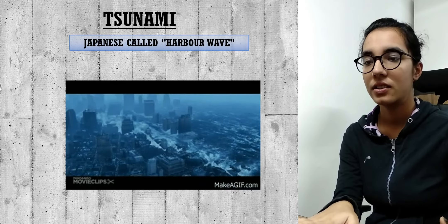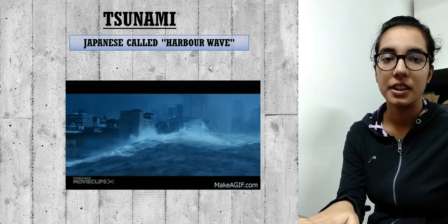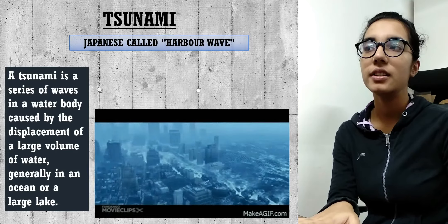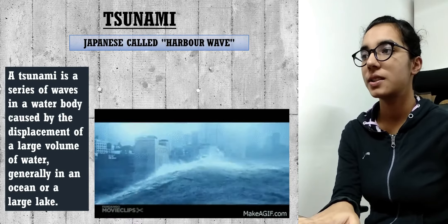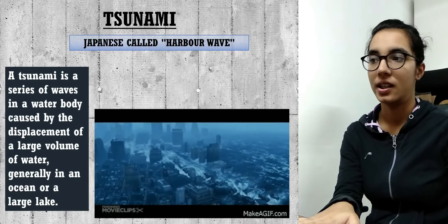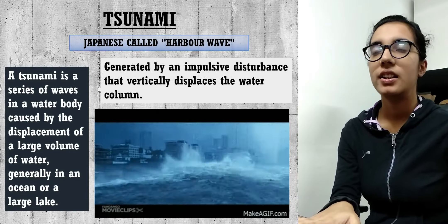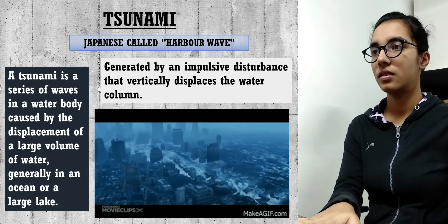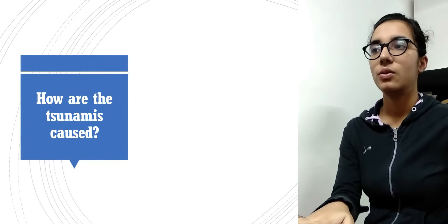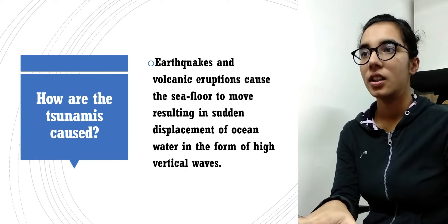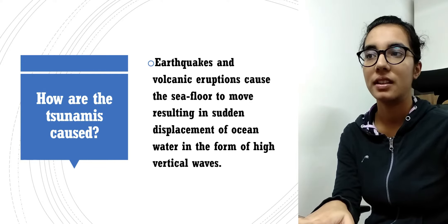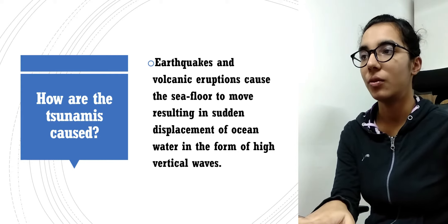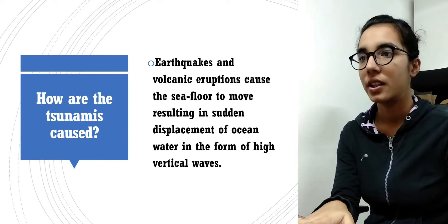Now let's move on to our main topic — tsunami. It is a Japanese term meaning 'harbor waves.' A tsunami is a series of waves in a water body caused by the displacement of a large volume of water, generally in an ocean or a large lake. It is generated by an impulsive disturbance that vertically displaces the water column. It is caused by earthquakes, volcanic eruptions, or sometimes landslides under the sea which cause the sea floor to move, resulting in displacement of ocean water upwards in a vertical direction.